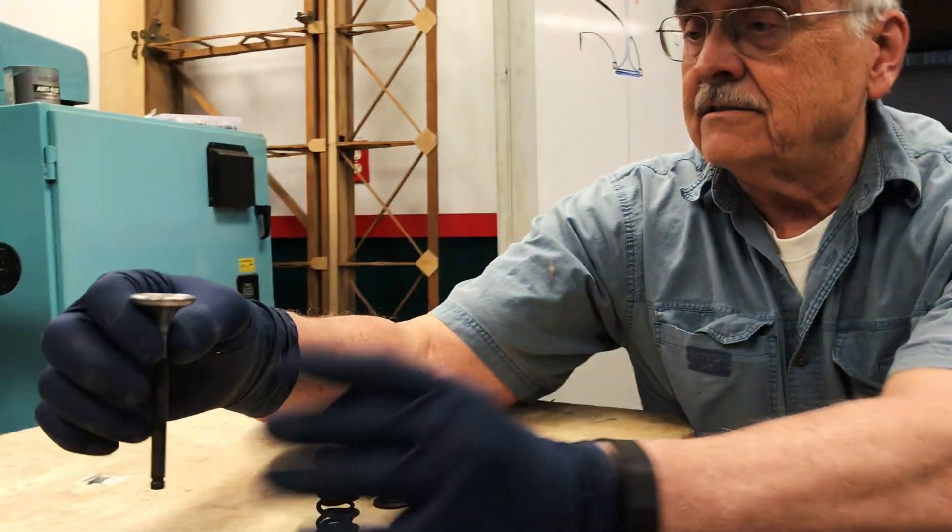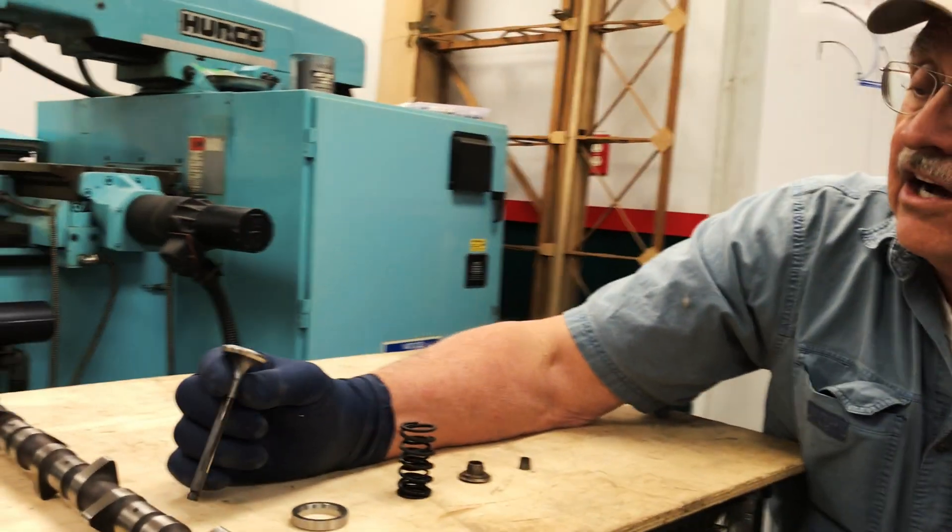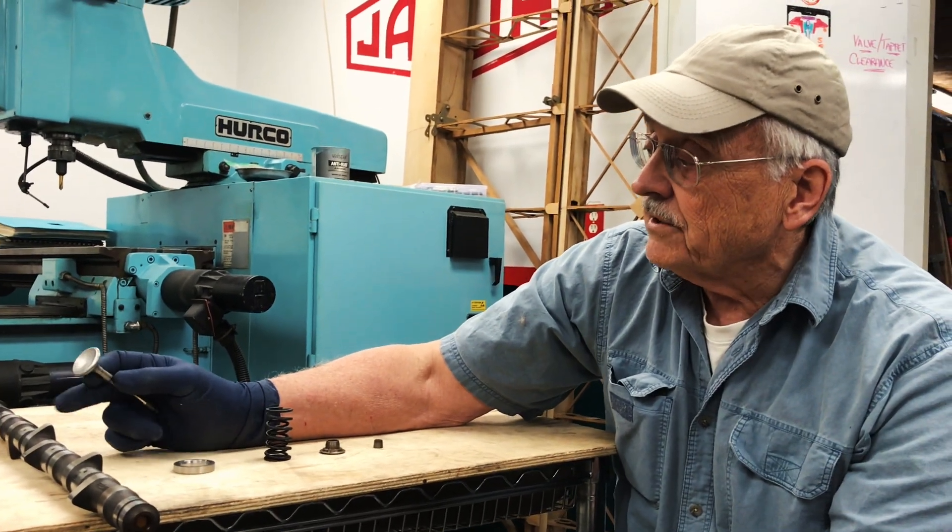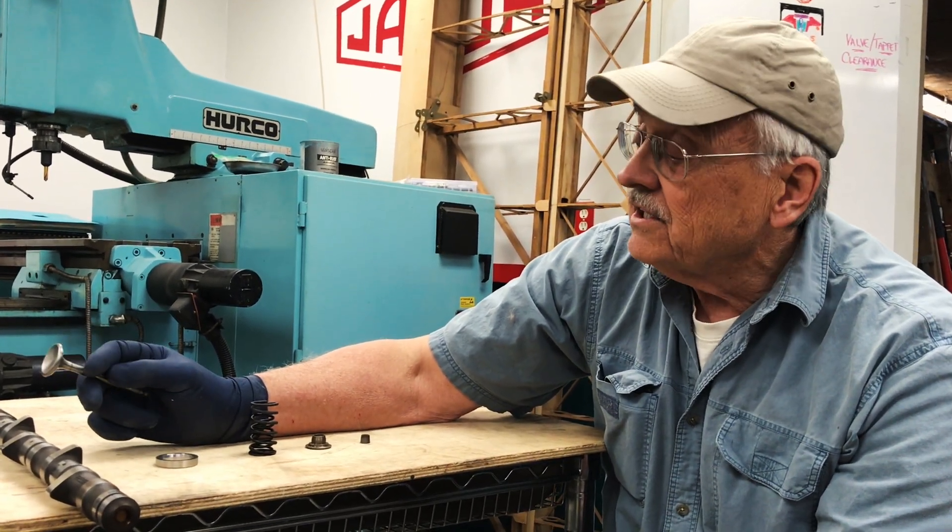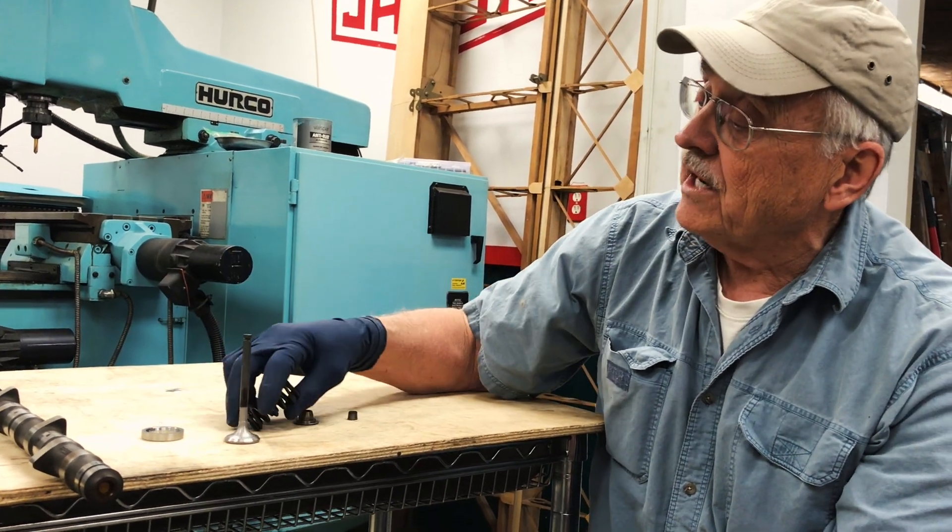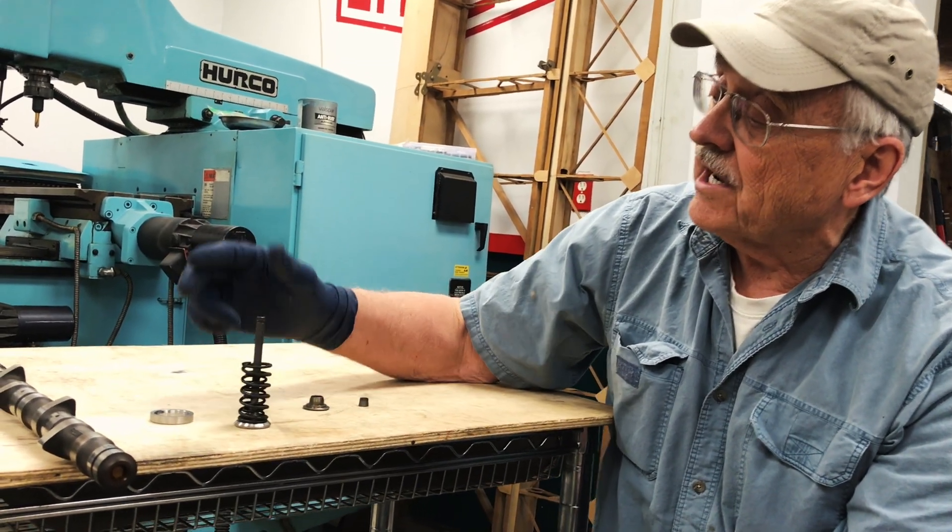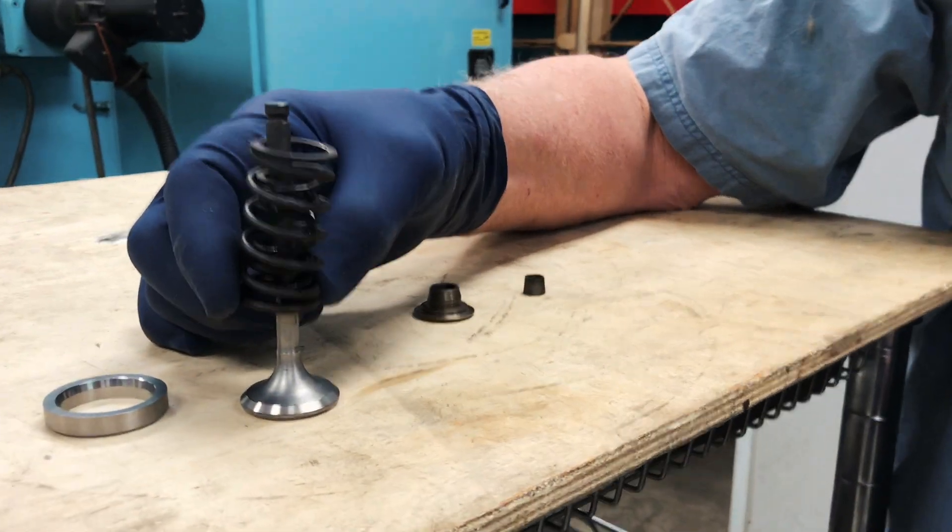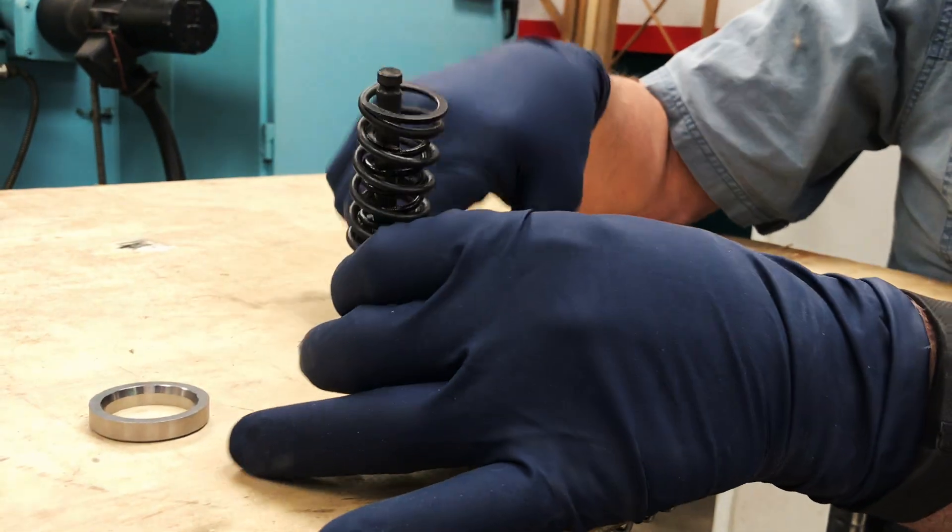You can't just have this valve kind of floating around. When the cam isn't pushing on the valve, you've got to be able to pull that valve shut, and that's the job of this spring that fits between the valve and the cylinder head.